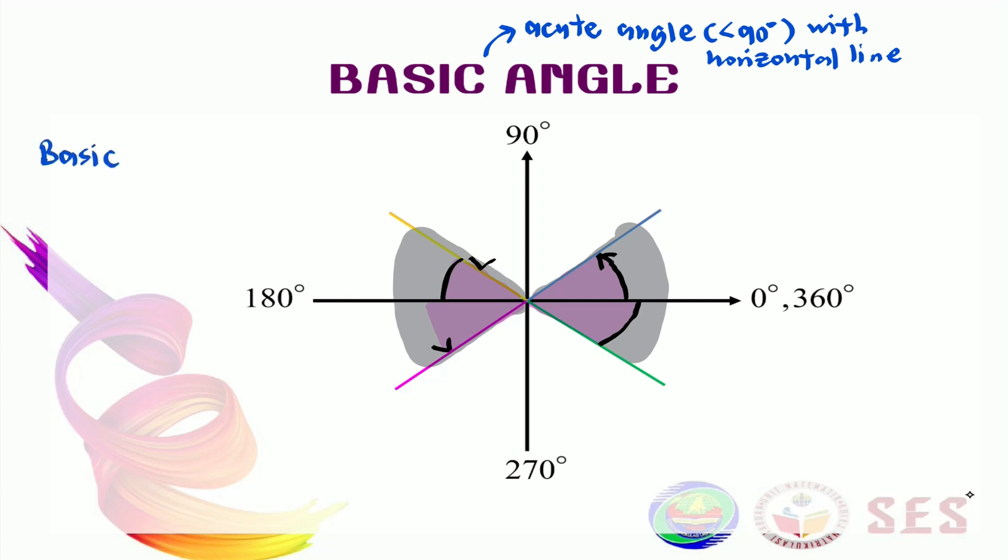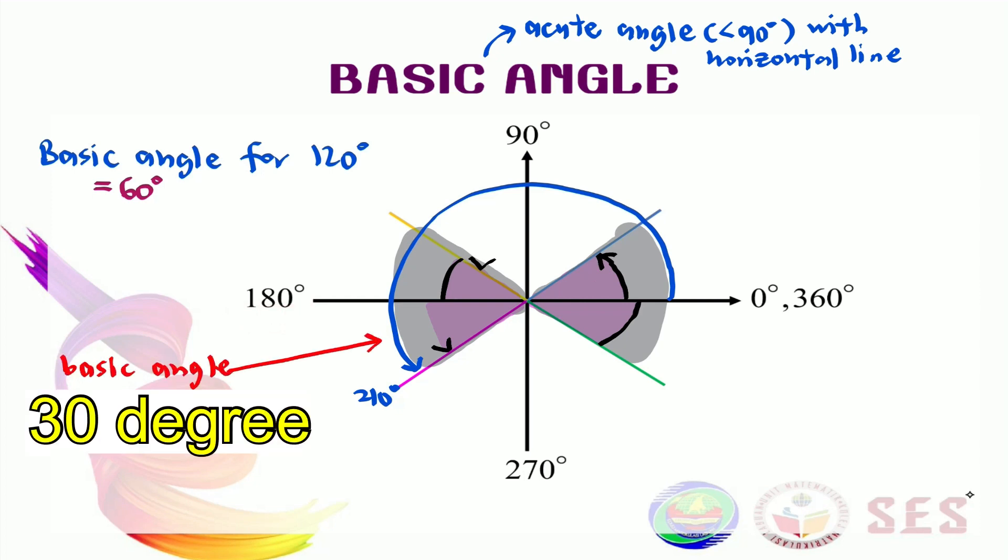Find the basic angle for 120 degrees. We know that 120 degrees is in the second quadrant. The basic angle should be here. We know that this is 180 degrees. That means our basic angle here is 60 degrees.